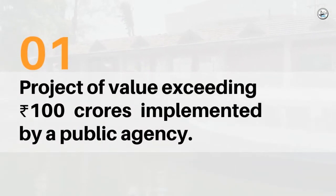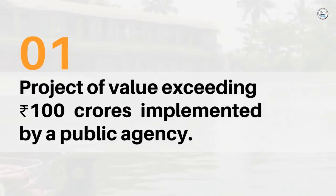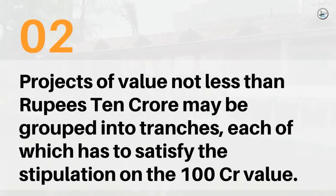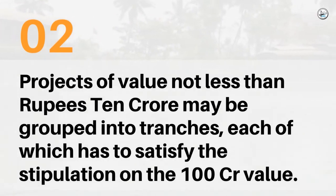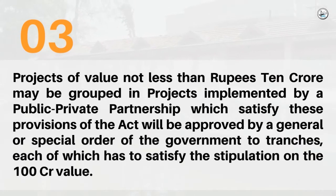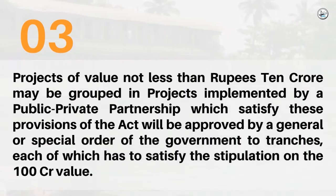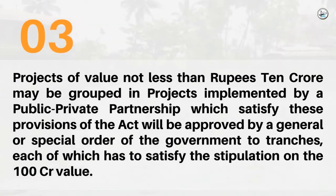The criteria are: 1. Project of value exceeding Rs. 100 crores implemented by a public agency. 2. For the purpose of assessing the value, projects not less than Rs. 10 crore may be grouped into tranches so that it satisfies the demand on the 100 crore value. 3. If the provisions of the act are satisfied by a public-private partnership, then their projects will be approved by a general or special order of the government.